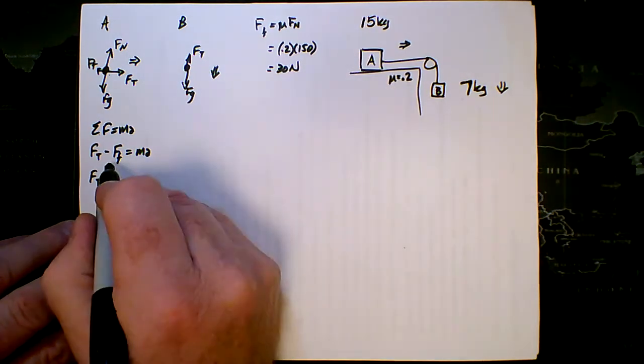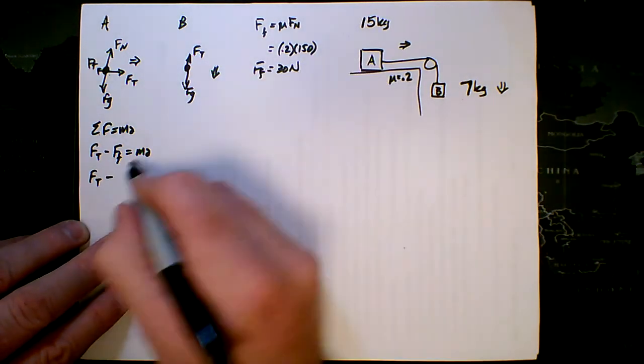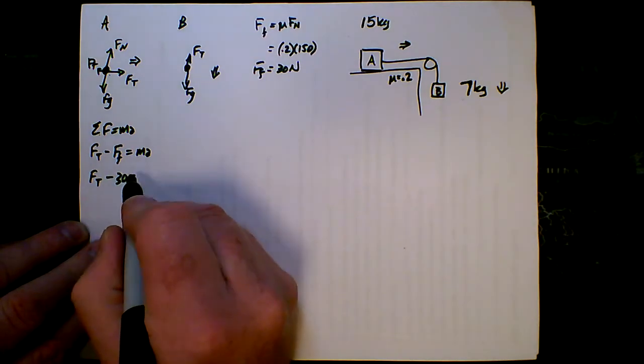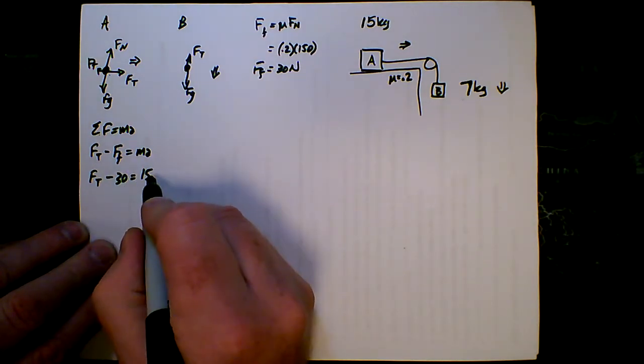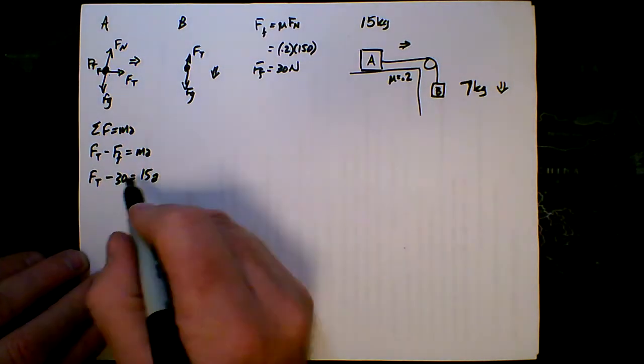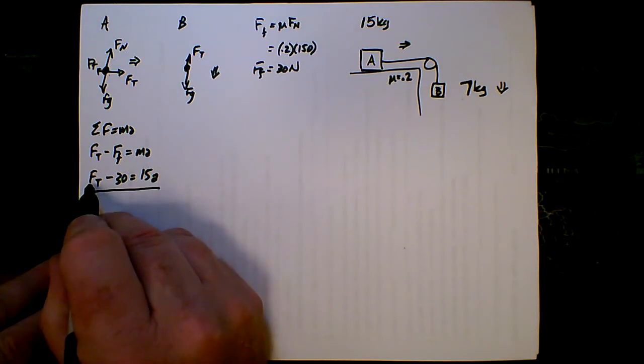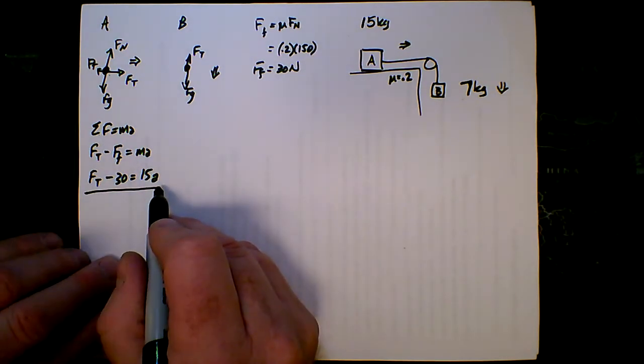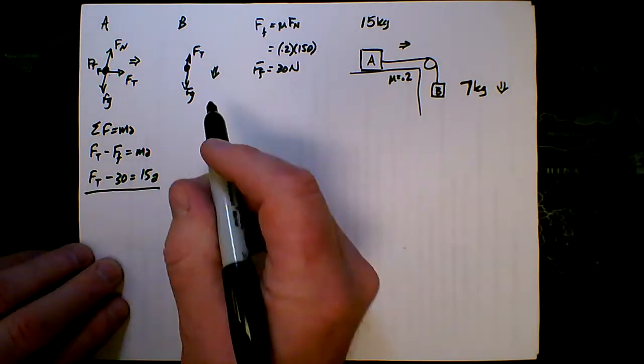So I can come back down here now, I know the friction force is 30 newtons. Force tension minus 30 equals the mass, 15, times the acceleration. I get to that point, and I can see I don't know the tension, don't know the acceleration, so I'm kind of stuck. So where I go from here is to block B.